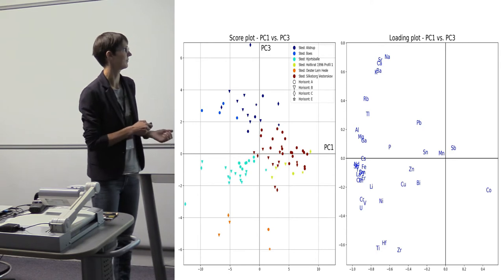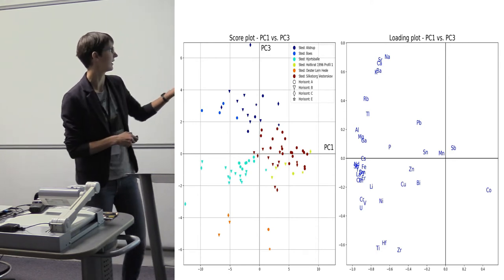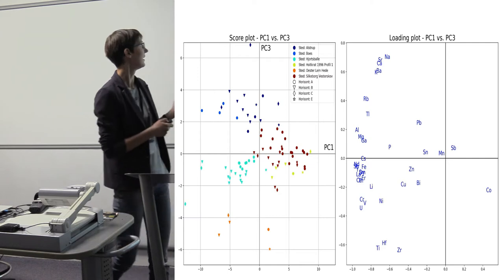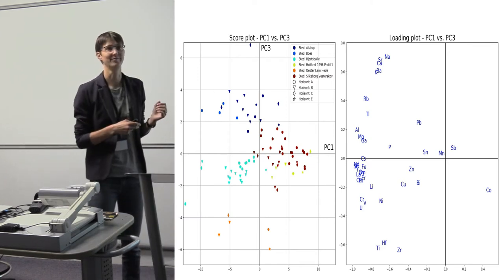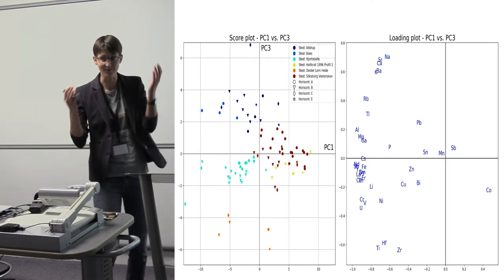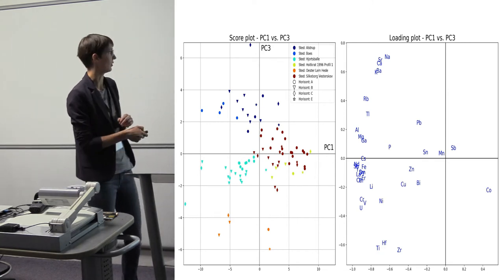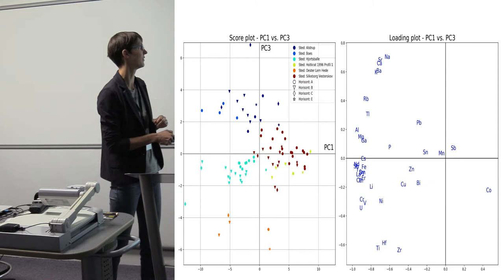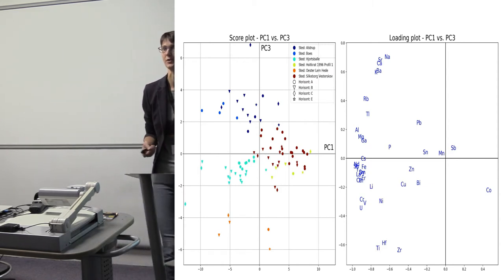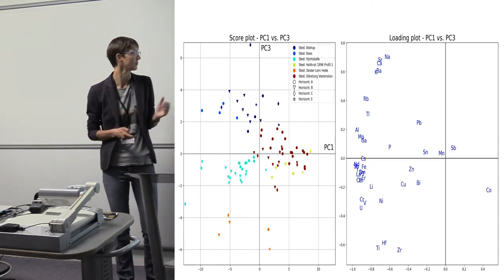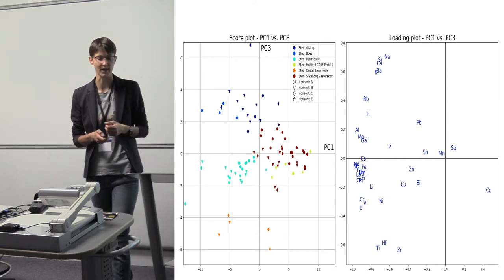When looking at how they're distributed on the graph, they have different parent materials and are not completely comparable. Although we can see that Holtkratz and Silkeborg-Vesterskøv are situated quite closely together, and Holtkratz might be a good reference for that site.